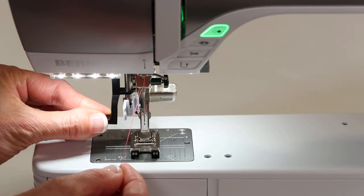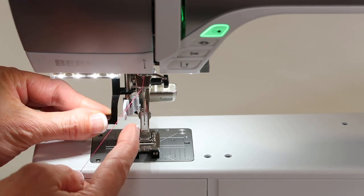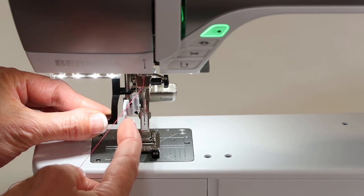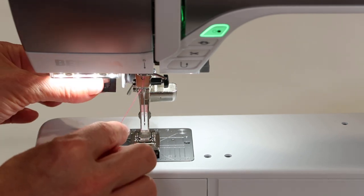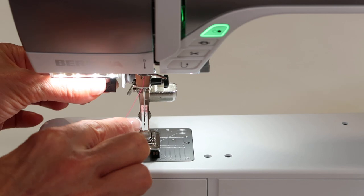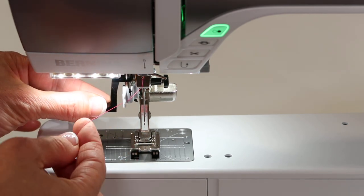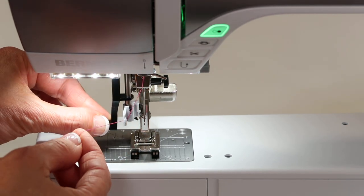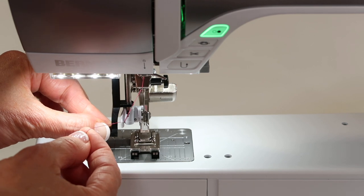I'm going to bring it down halfway and hook the thread underneath this little lever coming down. Instead of bringing it all the way down and then doing it, I usually catch it on my way down. Then bring the needle threader all the way down and then down a little further.